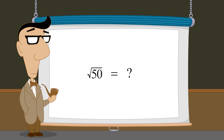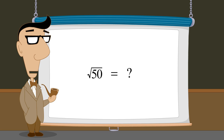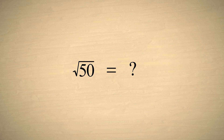But there is another way we can represent this radical expression, which is still exact, but maybe even easier to work with. Notice that we can factor the number under the radical sign as 25 times 2. Now, instead of using a radical sign, let's write this using exponents.